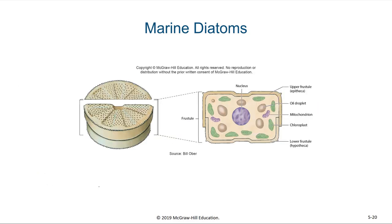Here we see a diagram of what a typical diatom looks like. There are two ends of the frustule — a larger valve and a smaller valve, or the upper and lower frustule. I often think of these as looking a lot like a petri dish with a lid. Those two interlocking plates are held together, and within there we have the cytoplasm, the chloroplasts, the nucleus, and the other cellular structures of the diatom cell. Remember, these diatoms are unicellular and eukaryotic.